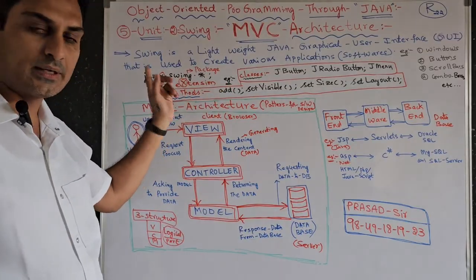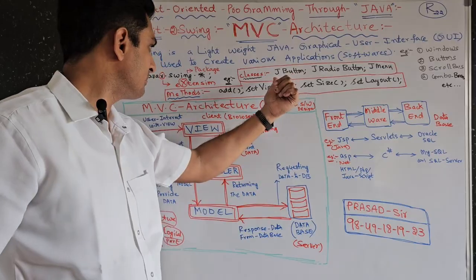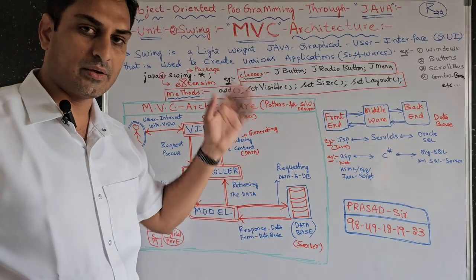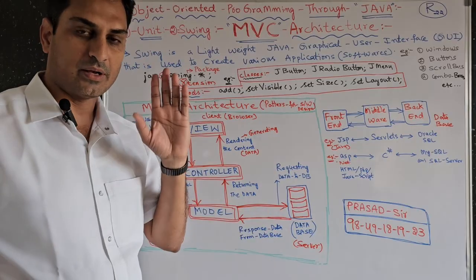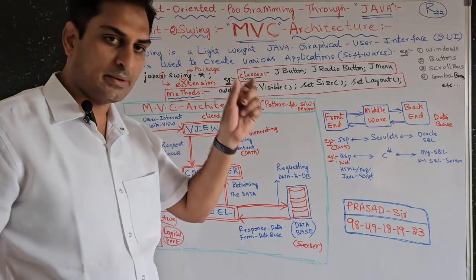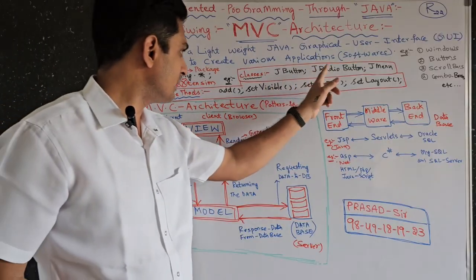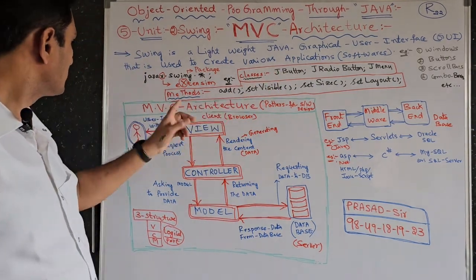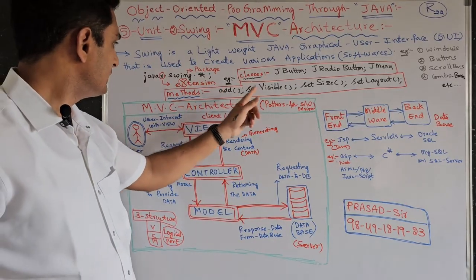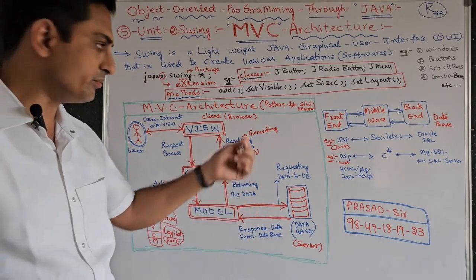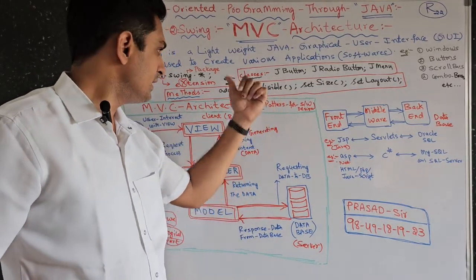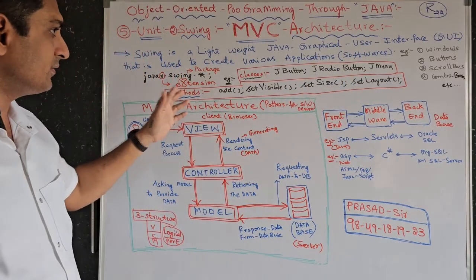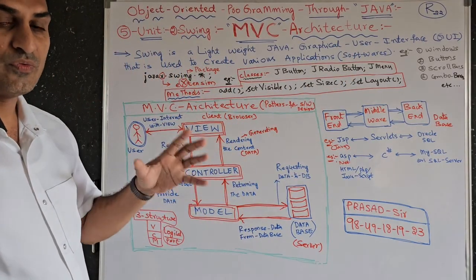Example classes used in Swing are JButton, JRadioButton, JMenu — here 'J' is capital and 'B' is capital. That is the naming convention rule: Java is a case-sensitive language, so wherever necessary we keep capital letters. 'J' stands for Java — JButton creates push, cancel, OK-type buttons. In these classes we have methods like add(), setVisible(), setSize(), setLayout(), etc. With these methods, classes, and the Swing package we create application software.